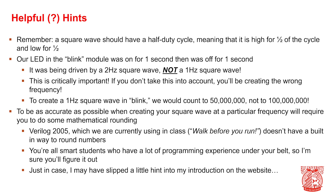Remember, a square wave should have a 50% duty cycle, meaning it's high or 1 for half the cycle and low or 0 for the other half. Our LED in the blink module was on for one second, then off for one second — it was being driven by a 2 Hz square wave, not a 1 Hz square wave. This is critically important because if you don't take this into account, you'll be creating the wrong frequency. To create a 1 Hz square wave in blink, we would count to 50 million, not 100 million. To be as accurate as possible, you're going to be required to do some mathematical rounding: if the decimal is 0.5 or greater, round up; if below 0.5, round down. I may have slipped a hint into my introduction on the homework website.